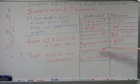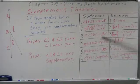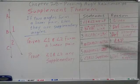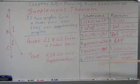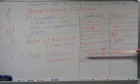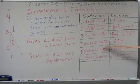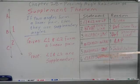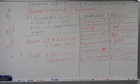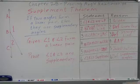Angle addition postulate. We also know that the measure of angle ABC equals 180. Since those two equal each other, we can substitute them — use them in place of each other. On the next statement, we simply use 180 in place of the measurement of ABC. So the measurement of angle one plus the measurement of angle two equals 180 degrees — by substitution.